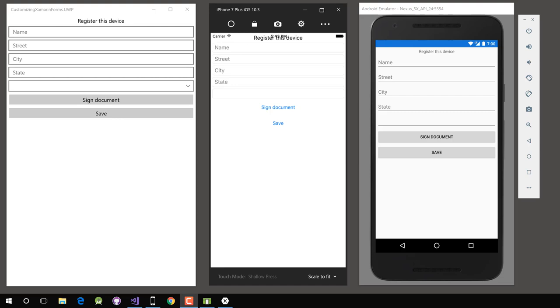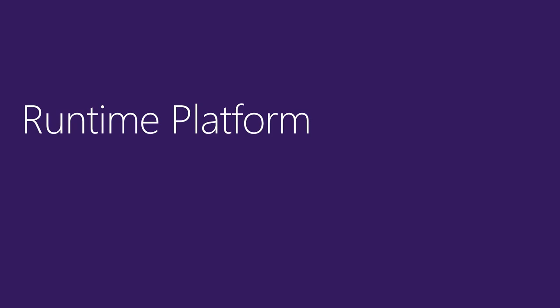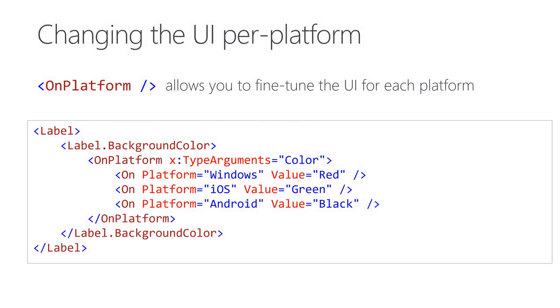Notice that the Android app and the Windows app don't have the same problem. This brings us to our first customization point with the Xamarin Forms APIs. We have the ability to change properties or call different methods in our shared code based on runtime information, including which platform the app is running on. By using the OnPlatform API, it's easy to change the value of any property that you set on an element in your UI based on the platform. You can specify the platform — Windows, iOS, or Android — and set a value for the property when the app runs on that platform. We're putting this into our shared code, but making it execute a specific branch or return a specific value based on the platform at runtime.